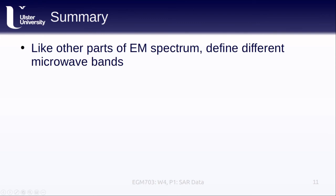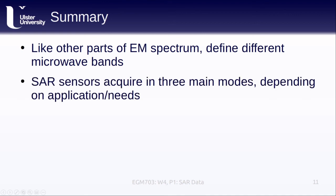So, in this lesson, we've covered how, just like we've seen with other parts of the electromagnetic spectrum, we can define different microwave bands, which tend to have different applications due to the properties of the signal and how it interacts with Earth's surface. In general, SAR sensors acquire images in three main modes, depending on the application or the needs of the mission. Individual sensors will have more specific acquisition modes, so be sure to have a look at the documentation for the sensor that you're interested in using.